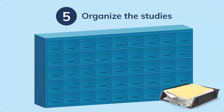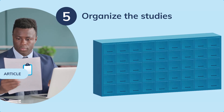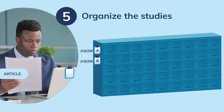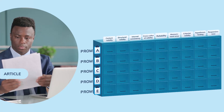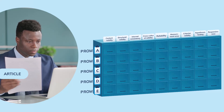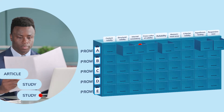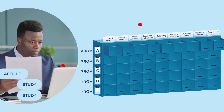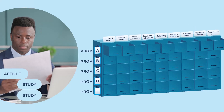In step 5, you organize the studies from your articles by PROM and measurement property in our filing cabinet. You read the articles for the first time and identify the PROMs. For each PROM, you want to evaluate all 9 measurement properties, starting with content validity, structural validity, internal consistency, and so on. You find all the studies in your articles and organize them by PROM and measurement property. You will often find multiple studies on different measurement properties in a single article — for example, a study on structural validity and a study on internal consistency.